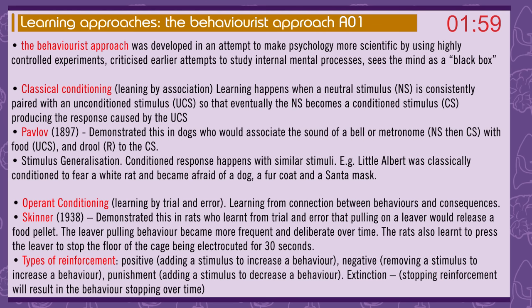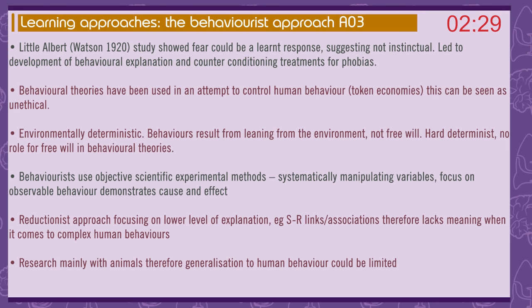Operant conditioning: learning by trial and error — learning from connections between behaviours and consequences. Skinner demonstrated this in rats who learnt from trial and error that pulling on a lever would release a food pellet, and the lever-pulling behaviour became more frequent and deliberate over time. Types of reinforcement: positive — adding a stimulus to increase the behaviour; negative — removing a stimulus to increase the behaviour; punishment — adding a stimulus to decrease the behaviour; extinction — stopping reinforcement will result in the behaviour stopping over time.